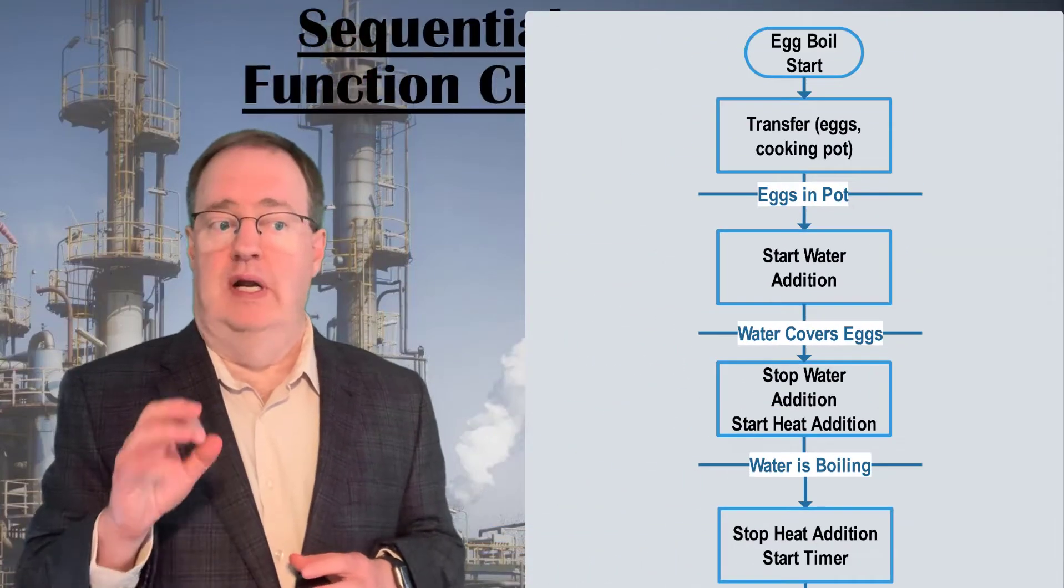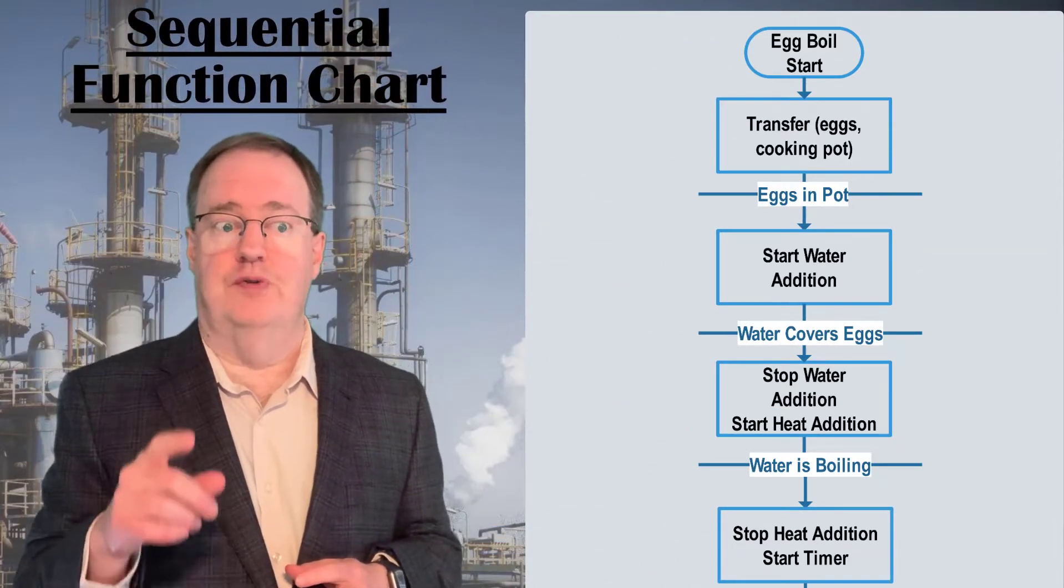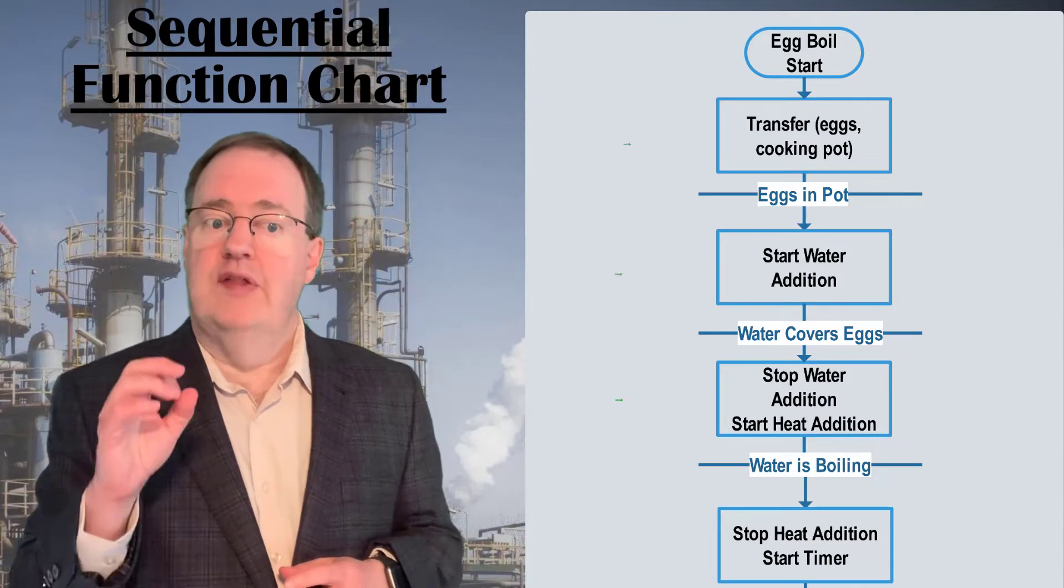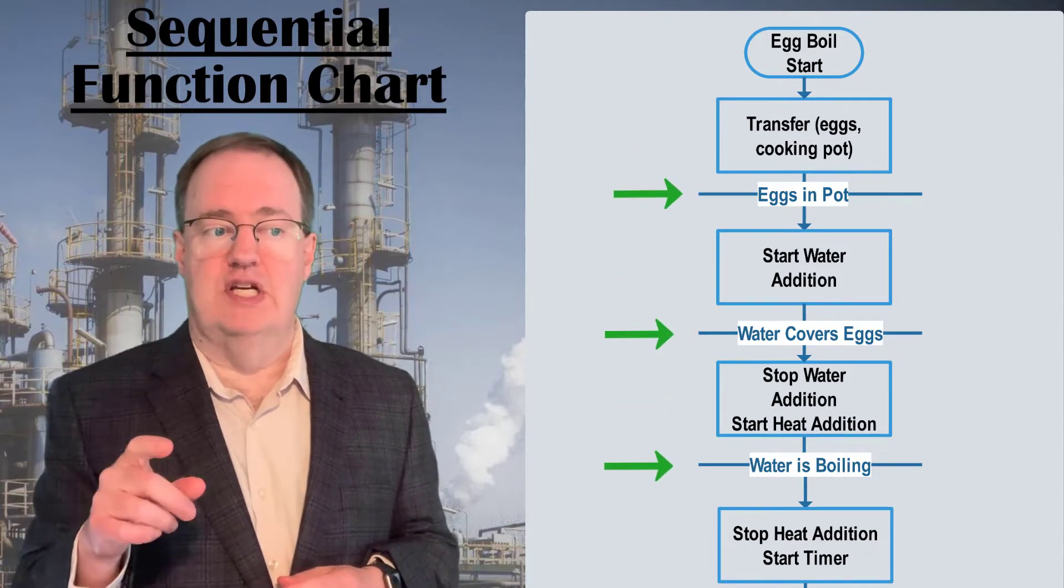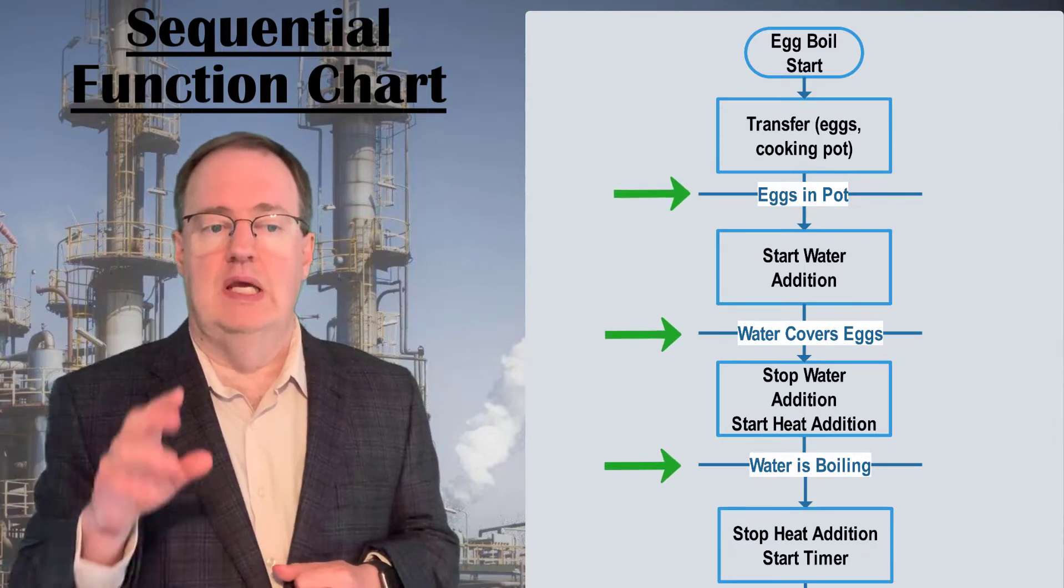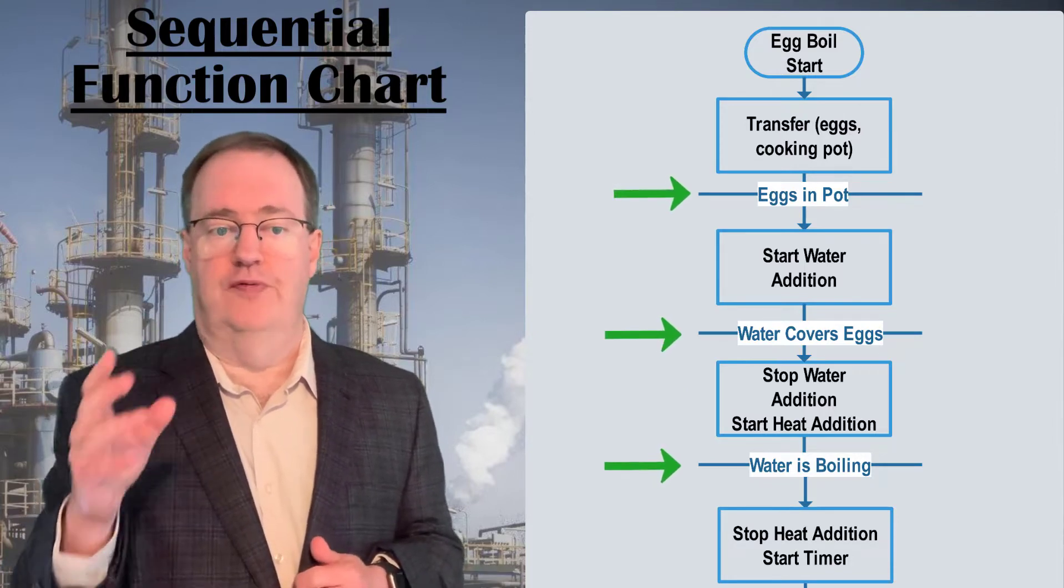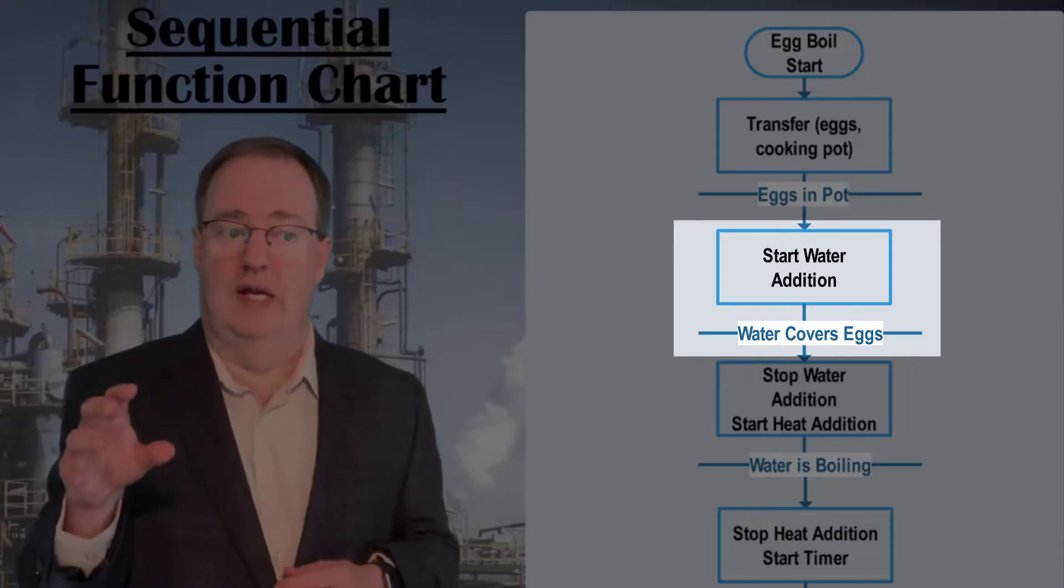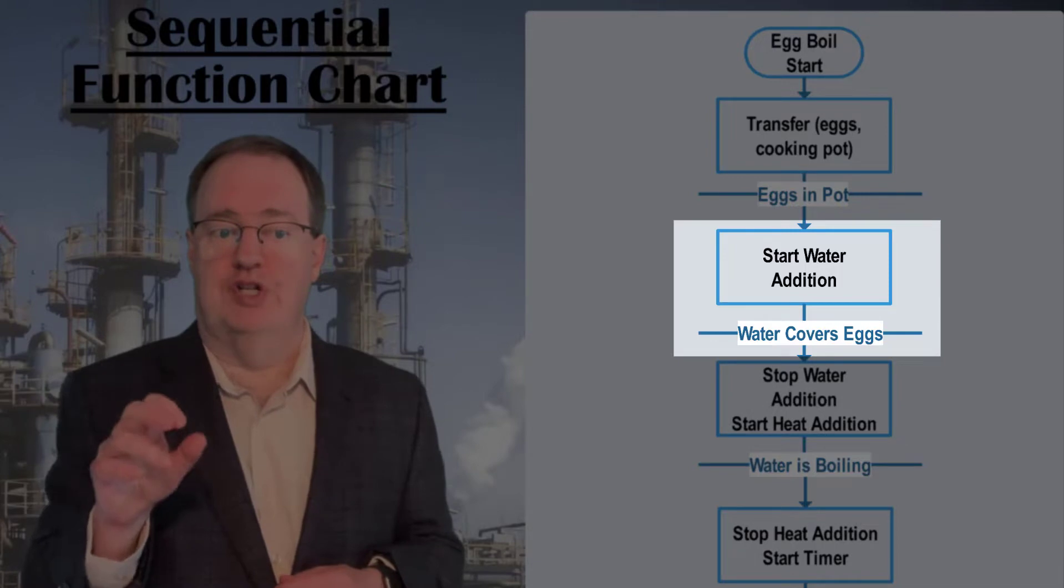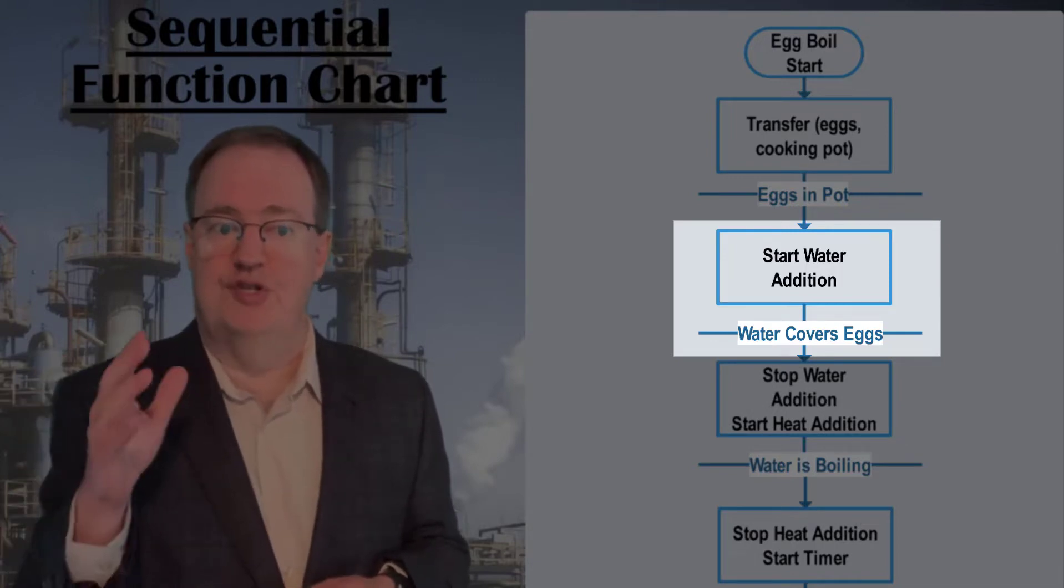Let's see how our egg recipe looks as a sequential function chart. The actions are now in boxes, and the transitions on lines separating the boxes. Each transition is true or false at any moment in time. We continue adding water until the expression, water covers eggs, is true.